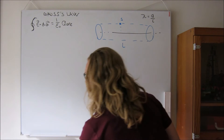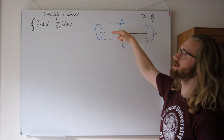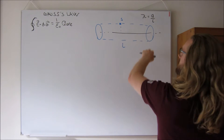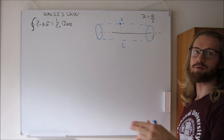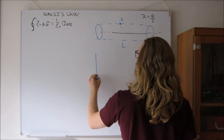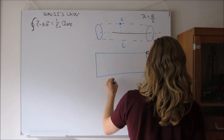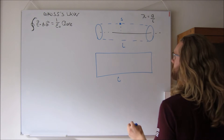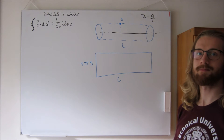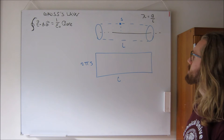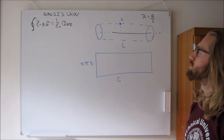If we take this cylinder and cut it open — imagine a toilet roll that you cut up — you end up with a rectangle of length L and a width of 2πs. That rectangle is the surface we want to integrate over.